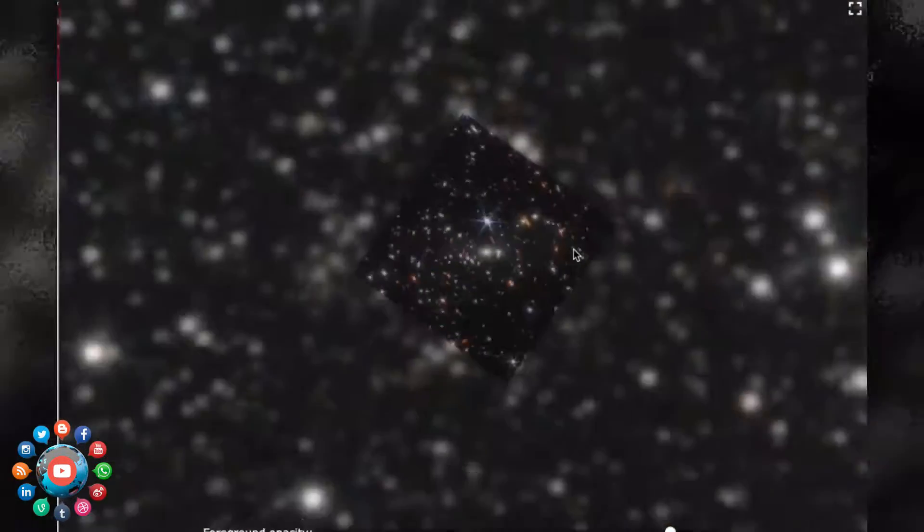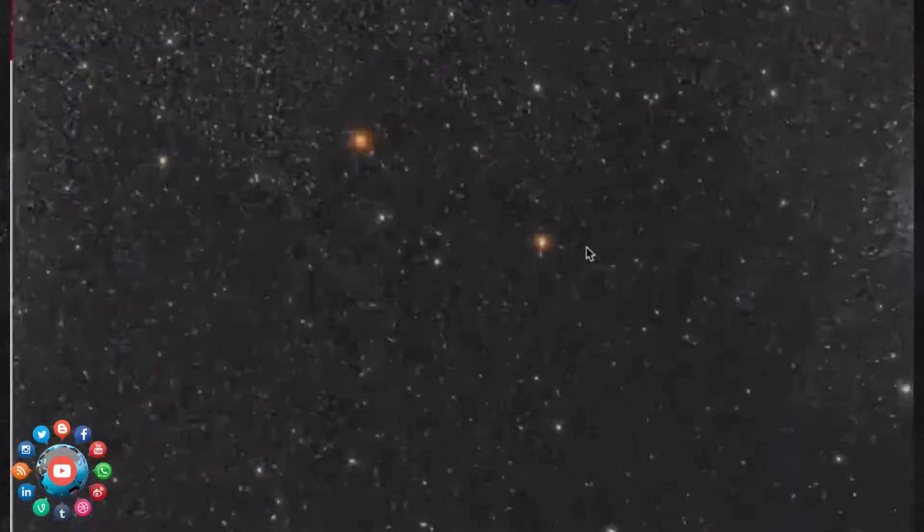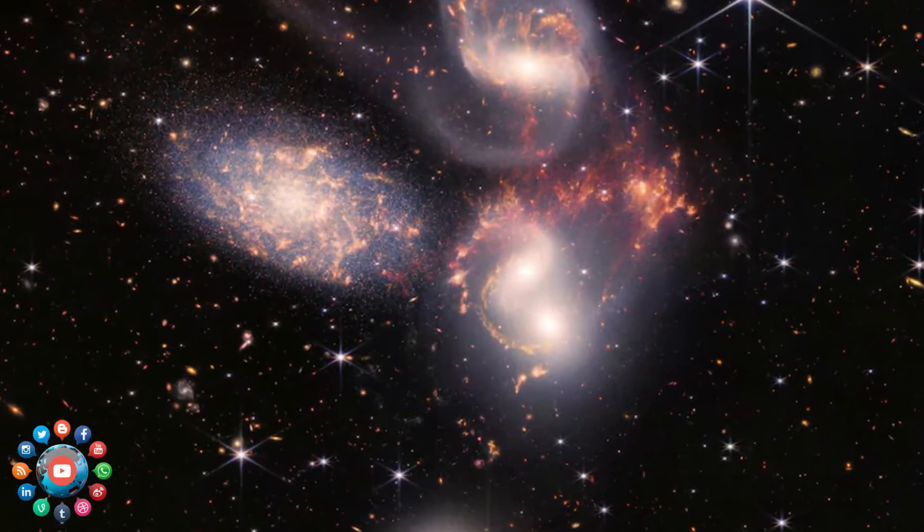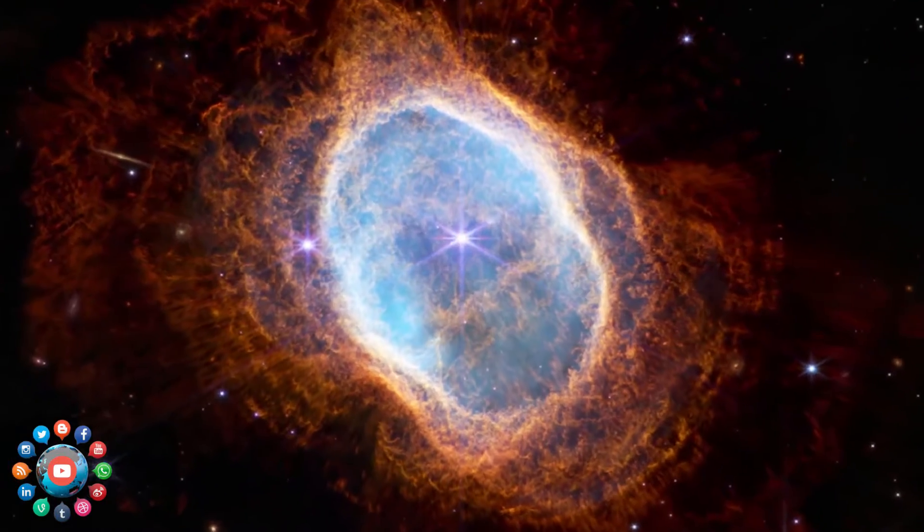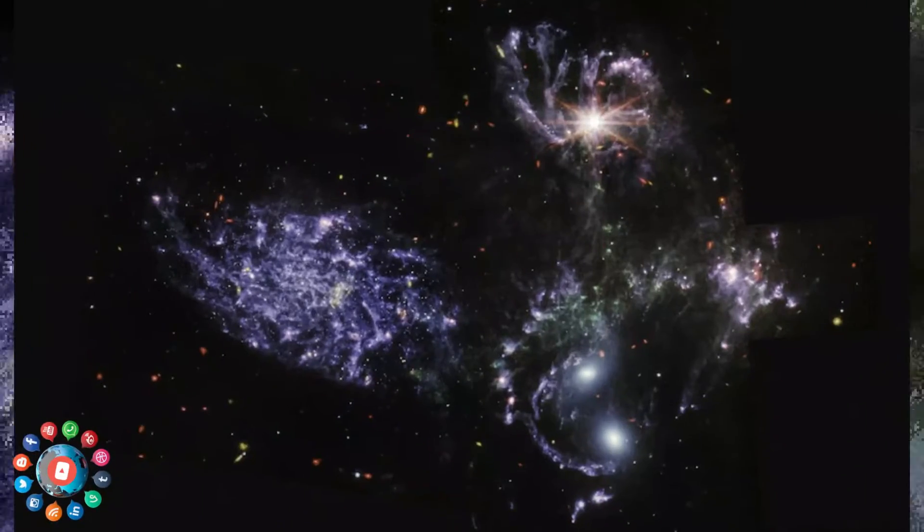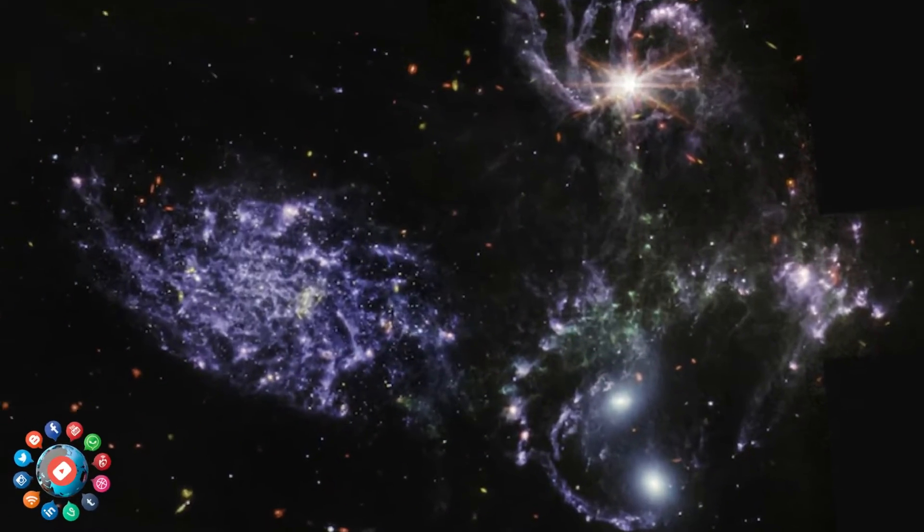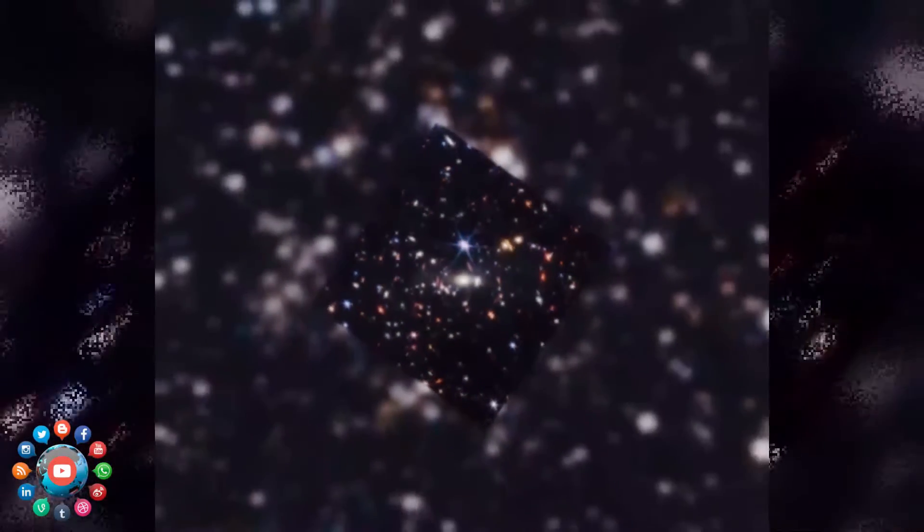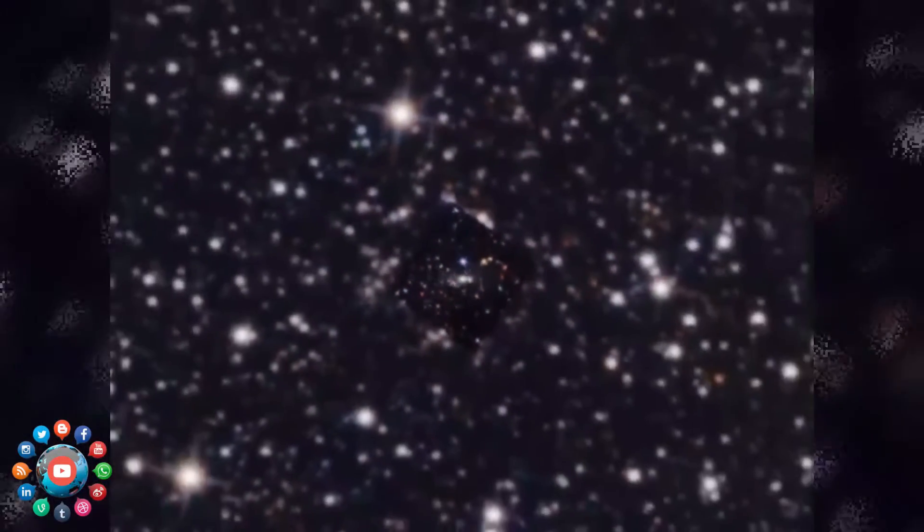Webb presented the finest image of the early universe dating back 13 billion years on Monday. The most recent batch includes the mountains and valleys of NGC3324 in the Carina Nebula, dubbed the Cosmic Cliffs, located 7,600 light-years away.